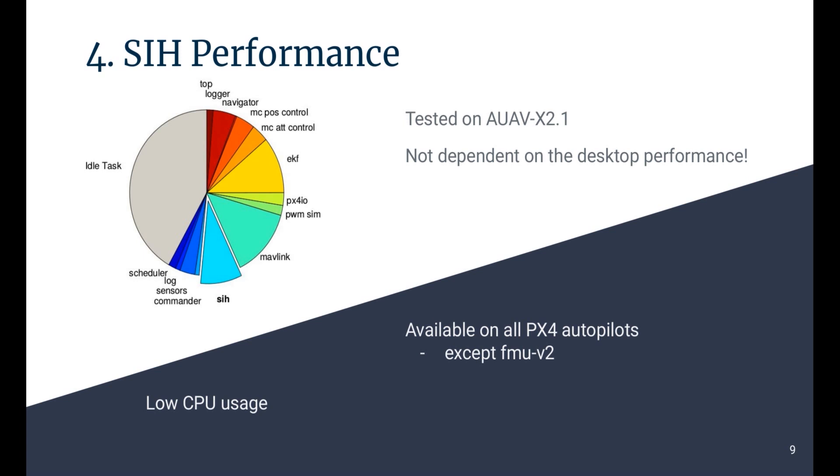The CPU usage was also investigated. This was tested on the AUAV X2.1 board. The SIH for a quadrotor vehicle running at 250 Hz was recorded to use less than 10% of the CPU. This is less than the EKF or the Mavlink module. And two good news. The first one is that this is not dependent on the desktop performance, as the entire simulation is running on the hardware board. So you can have the cheapest desktop ever, this will still run fine. And the second one, the SIH is available on all the PX4 compatible boards, except FMU V2 which has a silicon errata.